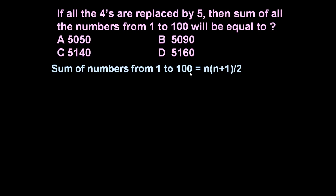Here n is 100 because first 100 numbers are taken. So sum of these numbers 1 to 100 will be equal to 100, n is 100, n plus 1 will become 101 divided by 2. This is equal to 5050. So sum of the numbers from 1 to 100 will be equal to 5050 provided 4 is at its own place.